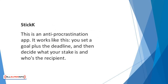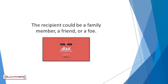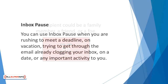Stick. This is an anti-procrastination app. It works like this: you set a goal plus the deadline, and then decide what your stake is and who's the recipient. You can use as little as $10 for your stake. The recipient could be a family member, a friend, or a foe. Procrastinate and miss the deadline and the money goes to someone else.